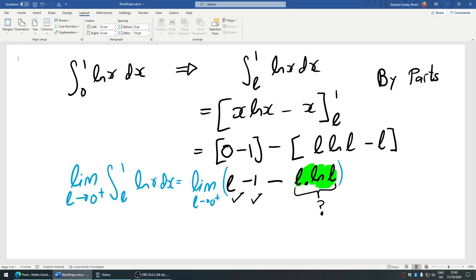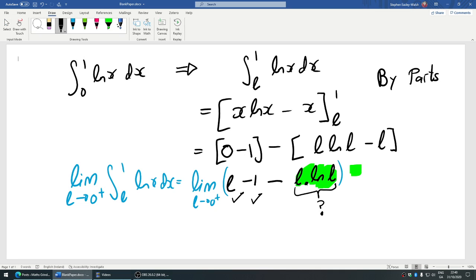Proof that the limit here is 0, so this will equal 0 minus 1 minus 0, which will equal minus 1. So therefore it's convergent.